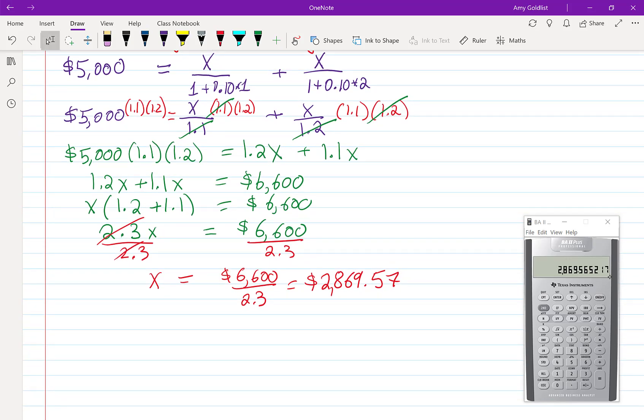And that is the answer and I'm going to finish by writing a sentence. Each payment is going to be $2,869.57.